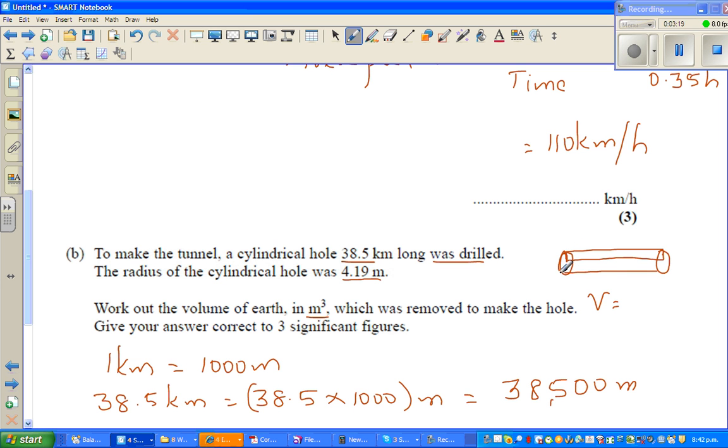Volume of a cylinder is area of a circle times the height. So this is your height and this is your radius. That is πr²h, that's the formula of volume.